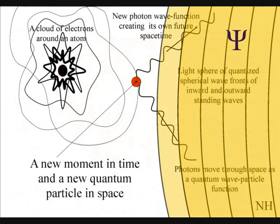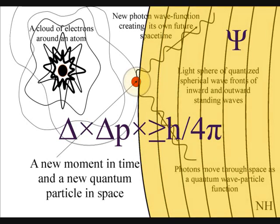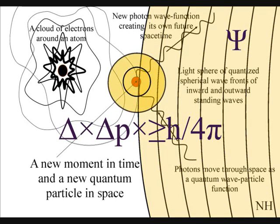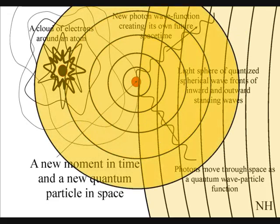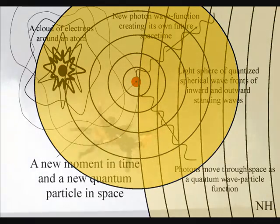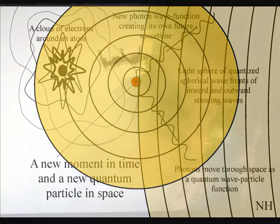We have one universal process that begins with the quantum wave particle function or probability function of quantum mechanics expanding out as an inverse sphere and ends with the inverse square law of gravity and Newton's third law of motion.